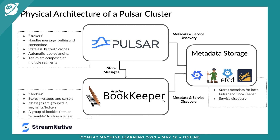This decoupled design allows Pulsar to scale dynamically. Tying the brokers and storage together is the metadata storage layer, which keeps all the records, policies, and managed ledger information for where topic components are spread out across Apache BookKeeper. The metadata layer has a pluggable architecture. Historically it's been based on Apache ZooKeeper, which has known scalability issues. In containerized environments you might consider etcd. StreamNative also released a new system called Oxia, a highly scalable system that solves many of the problems ZooKeeper had — highly recommended if you're going with Pulsar.